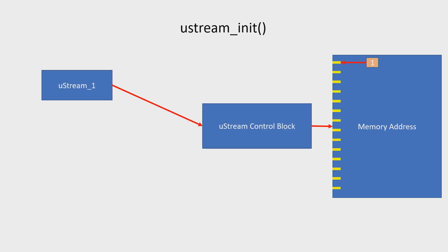I have a quick PowerPoint that goes over how the whole dynamic works. In this example, we have just a memory address — either malloc'd or statically allocated at compile time — with a certain size. We initialize a Ustream with that memory address, giving it a size. You have your handle labeled Ustream 1 and a control block that manages all the references to that memory address. Once initialized, you have a position at the very first address.